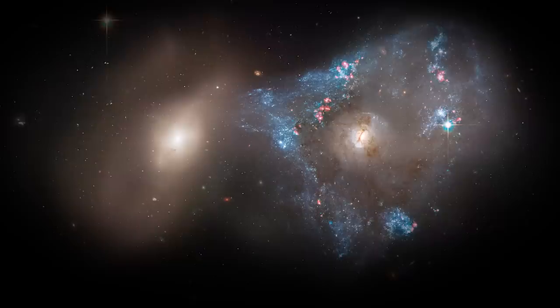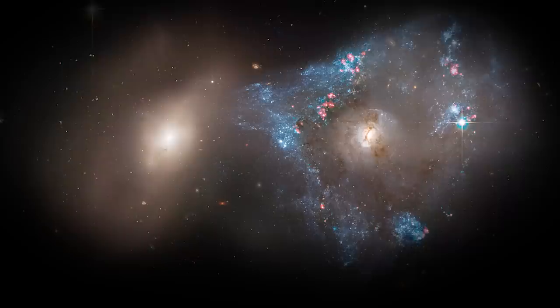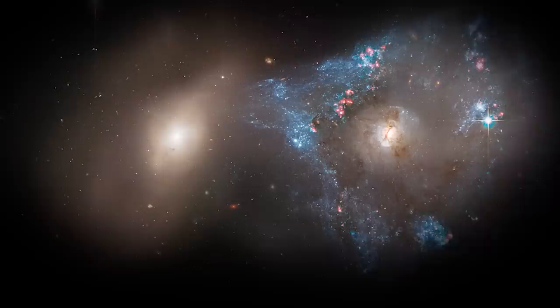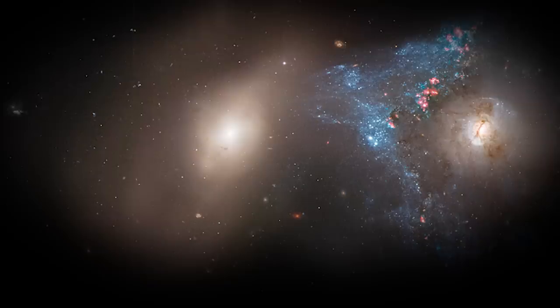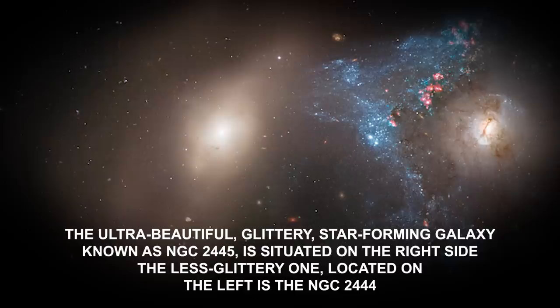Number 6: Galaxy Collision and Star Formation, ARP-143. This visual sight of the collision of two galaxies becomes much more vivid when we focus on the triangular-shaped, chaotic process of the formation of stars. The galaxies that are part of this collision are together known as ARP-143. The ultra-beautiful, glittery, star-forming galaxy known as NGC 2445 is situated on the right side. The less glittery one, located on the left, is NGC 2444.